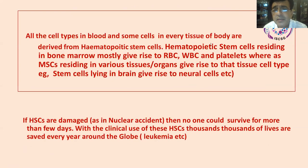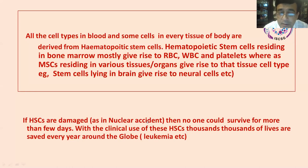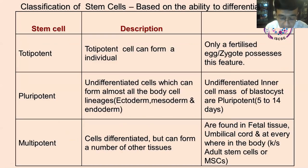Hematopoietic stem cells produce red blood cells, white blood cells, and platelets continuously. Mesenchymal stem cells give rise to different parts of the body — for example, stem cells in the brain give rise to neural cells. Everything is constantly repairing. Hematopoietic stem cells are so important that if a nuclear accident occurred, nobody could survive within a few days because HSCs would be destroyed. The clinical use of hematopoietic stem cells has been established for leukemia treatment for many years, providing a good foundation for research into mesenchymal stem cells. Another classification of stem cells is based on their ability to differentiate.